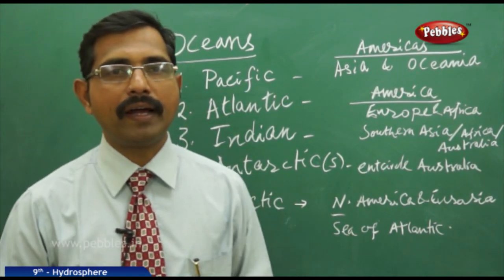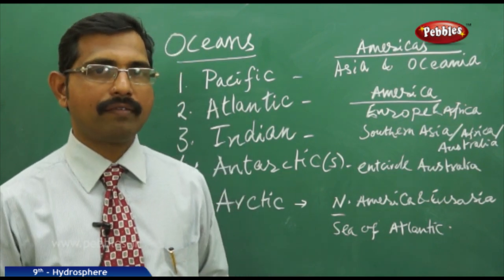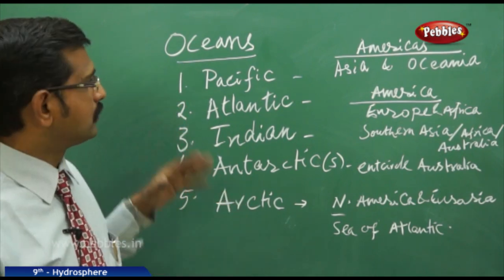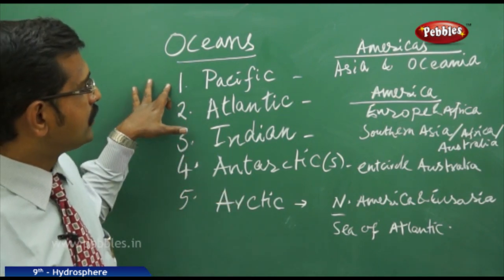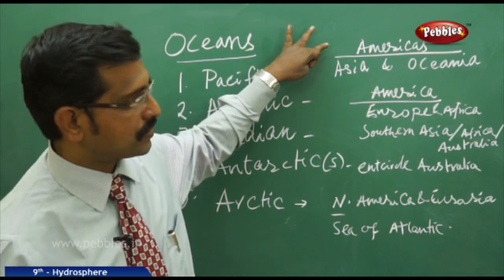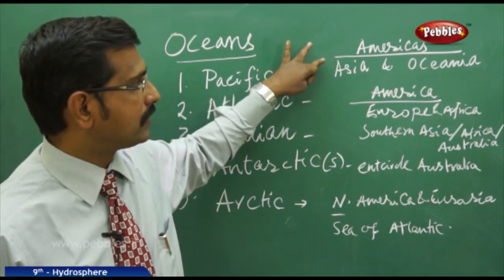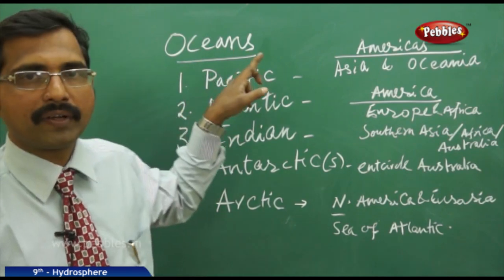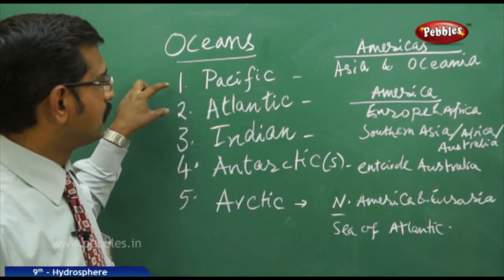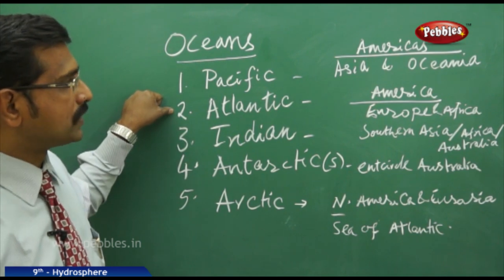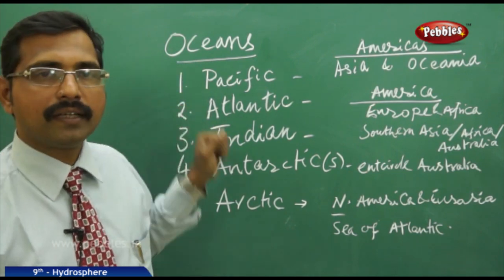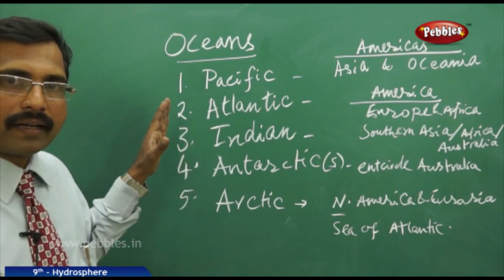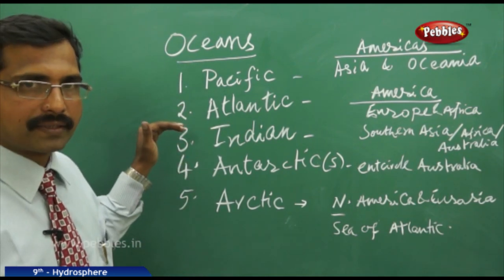There are five major oceans in total. The Pacific Ocean is the largest, occupying the most space in Earth's crust, separating the Americas from Asia. It is where the Pacific Ring of Fire is located. The Atlantic Ocean stands in second place, separating the Americas from Europe, Asia, and Africa.